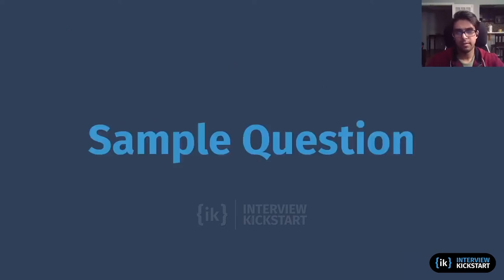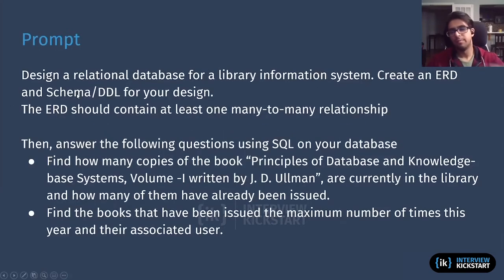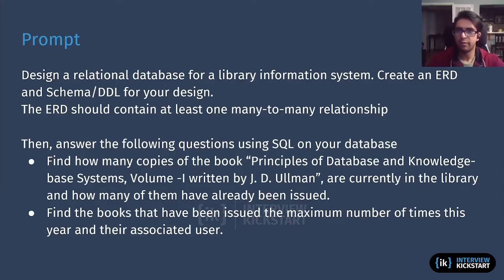With that, we're going to get to our question. Here we have a prompt — you can pause it if you need more time to read through it. The prompt says: design a relational database for a library information system, create an ERD and schema DDL for the design. The ERD should contain one many-to-many relationship. Below that, it has two additional SQL questions to be answered from our design. At first glance, it seems like we don't really have requirements on what we need to implement in our ERD and schema.